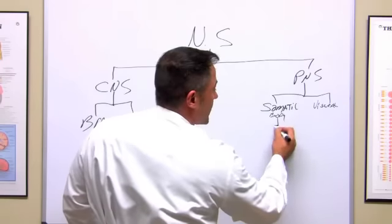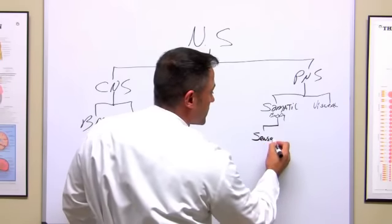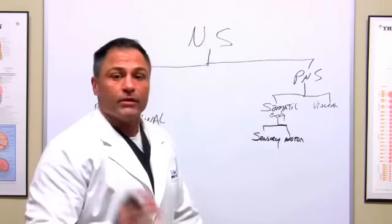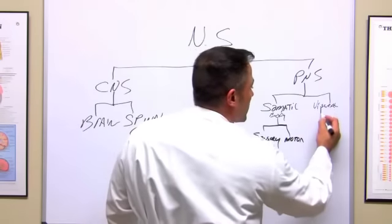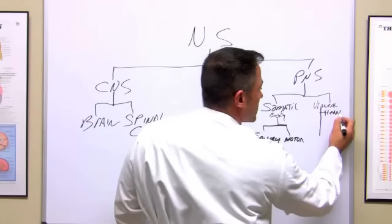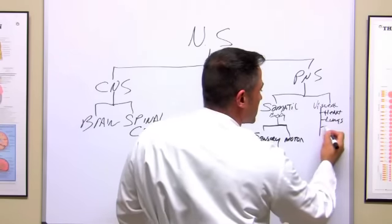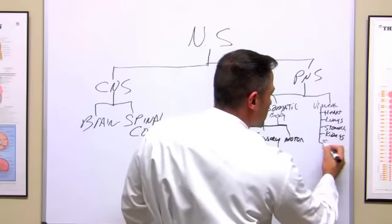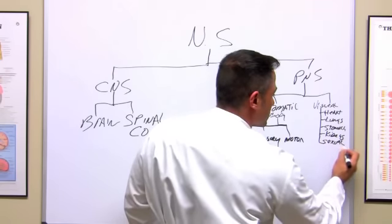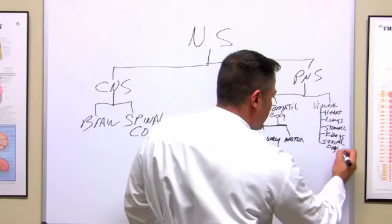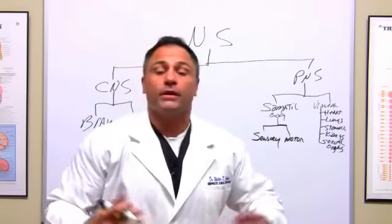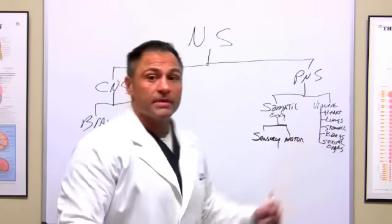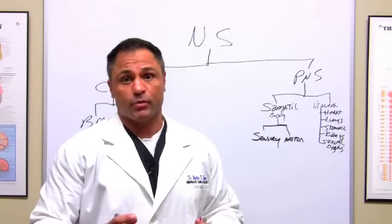The somatic system is broken down into a sensory component and a motor component. And your visceral nervous system, well that is what goes to your heart, lungs, stomach, kidneys, sexual organs. It's what runs all of your insides, your intestines and everything.